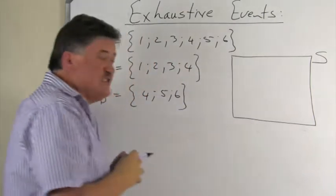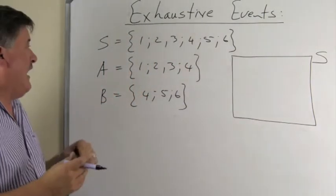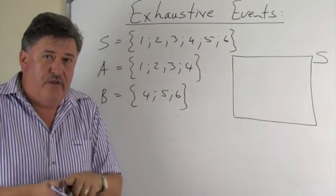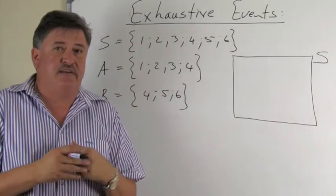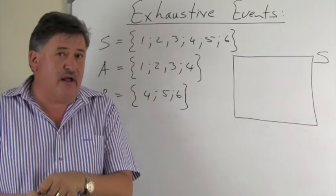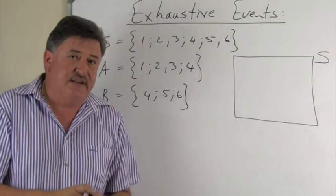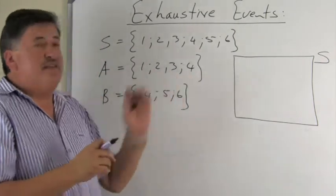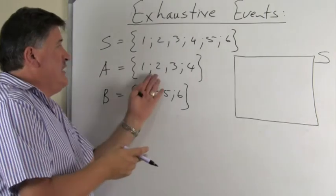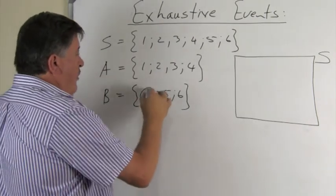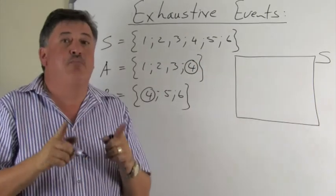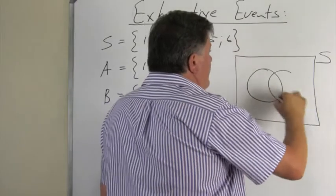So let's look at the Venn diagram. Always remember your sample space first. Now, are there any outcomes in both? Remember with the first special event, the mutually exclusive events, there were no outcomes in both, so there was no intersection. Now, as you can see, 4 is an outcome that is in both.